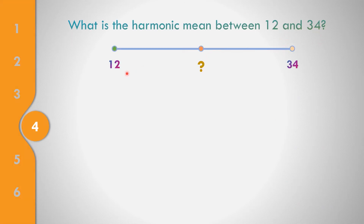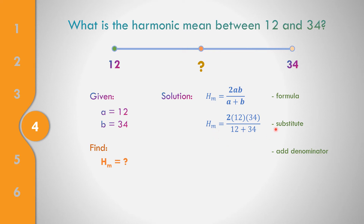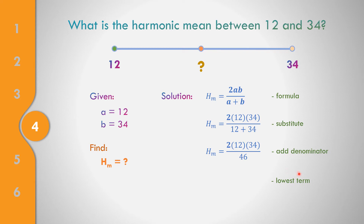What is the harmonic mean between 12 and 34? The first term A is 12 and the last term B is 34. Using HM = 2AB / (A + B), we substitute: HM = 2 × 12 × 34 all over 12 plus 34. The denominator 12 plus 34 equals 46. We then reduce 2/46 to its lowest term, which is 1/23.